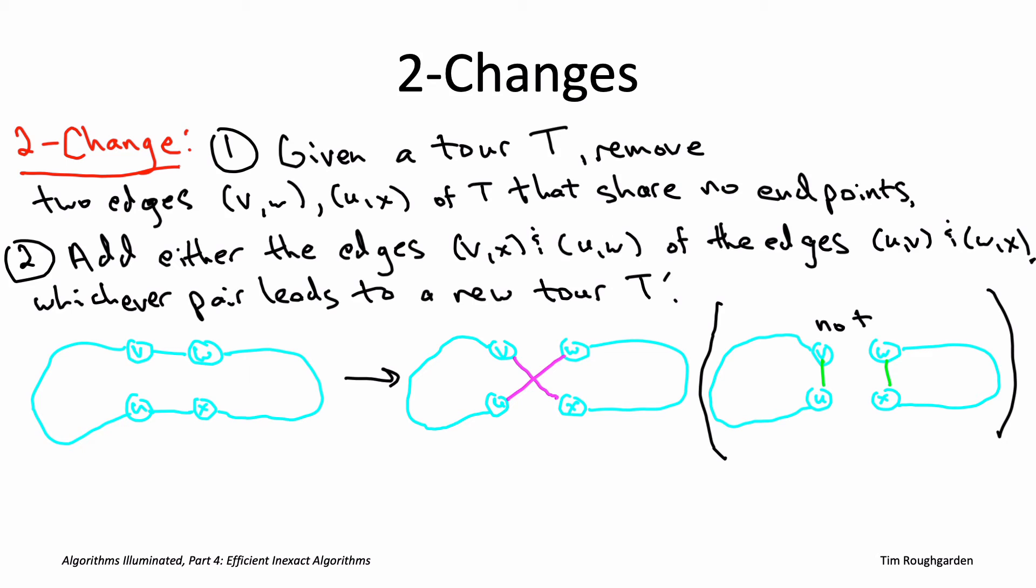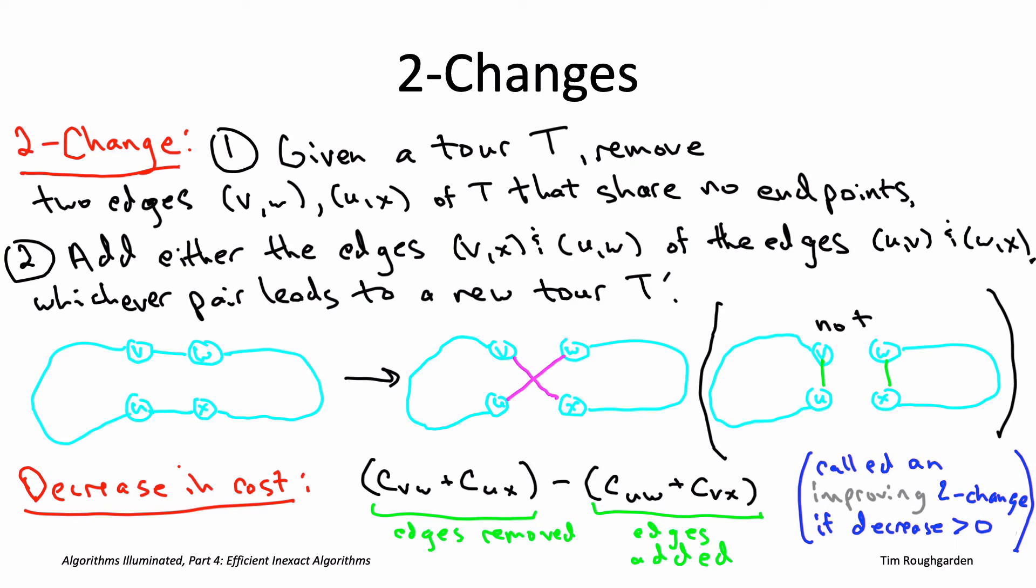Naturally, modifying a tour can change its total cost. What is the drop in tour costs from a given 2-change? The good news is that we remove the edges V,W and U,X, so the tour cost drops by whatever the cost of those edges were. On the other hand, we've plugged in new edges - in the example, at least U,W and V,X - so those are edges we now have to pay for, which gets subtracted off of the decrease in tour costs. We're interested in 2-changes where this decrease is positive, where the benefit of the edges we removed outweighs the cost of the new edges we added. If you have a 2-change with that property - a 2-change that strictly decreases the tour cost - we call that an improving 2-change.